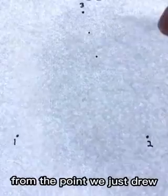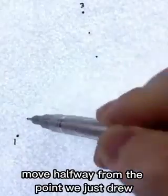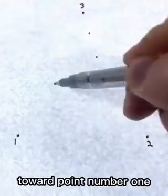Now, we repeat the two rules from the point we just drew, randomly select one of the original three points. Suppose we choose one this time, move halfway from the point we just drew toward point number one, and draw another point.